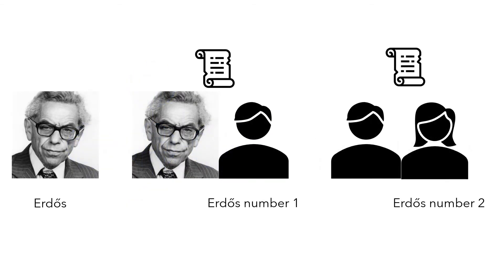Researchers use publicly available data to gather evidence. Nowadays, all scientific publications are recorded in digital databases, which automatically creates a detailed digital record of the social and professional connections among scientists. If a paper has more than one author, co-authorship relationships indicate scientific collaboration among authors.